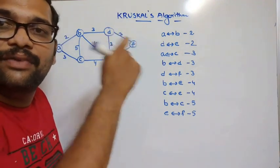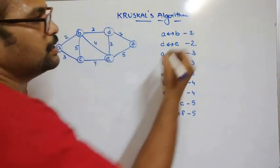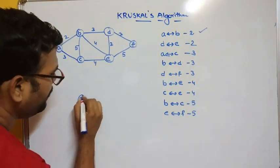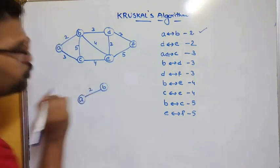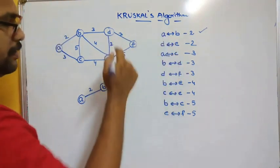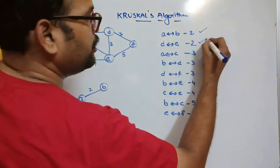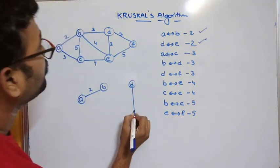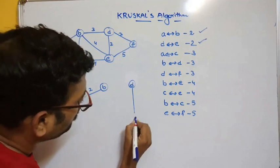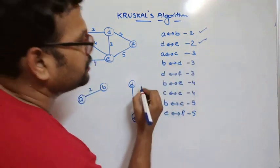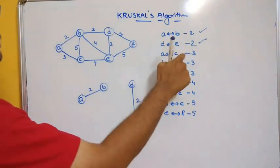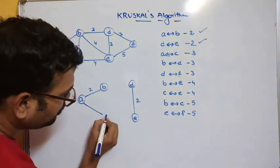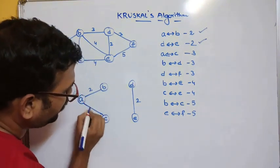Now, consider each least-costed edge and include it in the tree. First, include A to B with cost 2. Next, D to E with cost 2 — add D and E. Then A to C with cost 3 — there is no C, so we add it. A to C, cost 3.